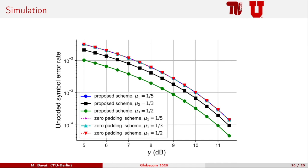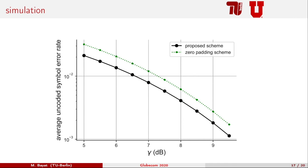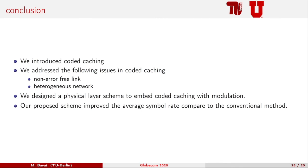Here are simulation results. We consider three users with different cache sizes: user 1 has the lowest cache memory and user 3 has the largest. In our scheme, user 3 achieves the maximum minimum distance and lowest error probability, followed by user 2 shown in black, then user 1, with the zero padding scheme shown for comparison. In the second figure, average encoded symbol error rate versus SNR shows our scheme in black and zero padding in green — on average our scheme performs much better than conventional zero padding.